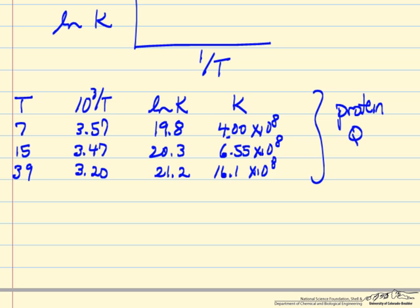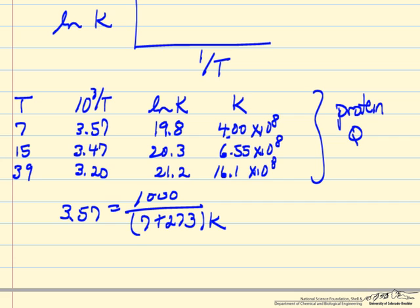So this is 1,000 divided by T, and that's just to make it easier to display. So keep in mind I got 3.57 by taking 1,000 divided by 7 plus 273 to make this absolute temperature, and that's critical that this is in Kelvin.